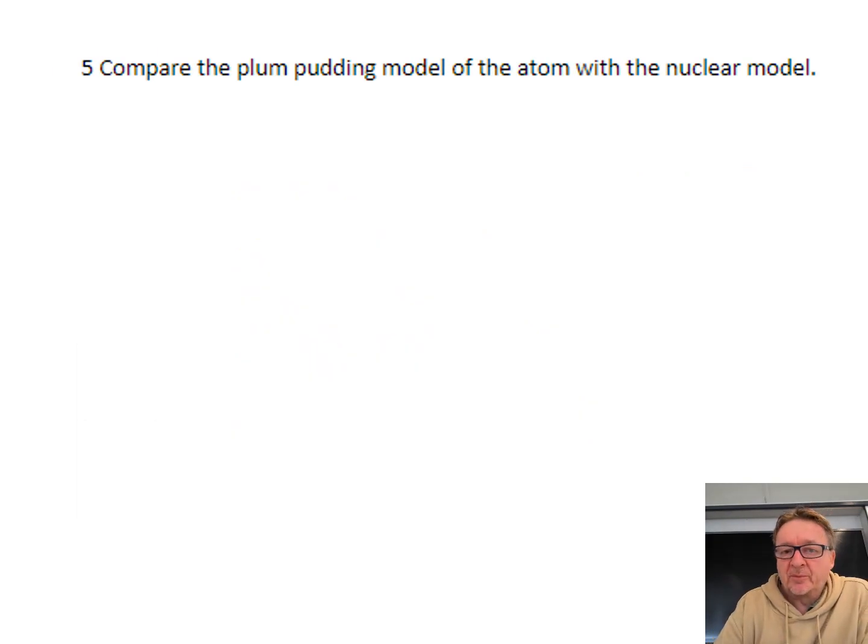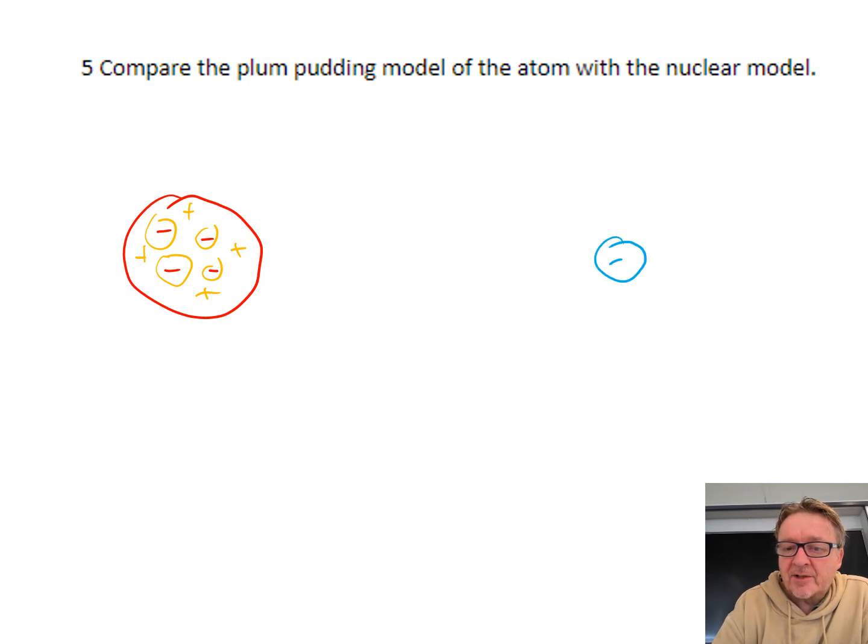Now we're going to compare the plum pudding model and the nuclear model. The plum pudding has negative chunks in it, like fruit in a plum pudding, and the other bits around it are positively charged. The nuclear model starts with a positive nucleus, and around the outside there are shells with electrons in them.